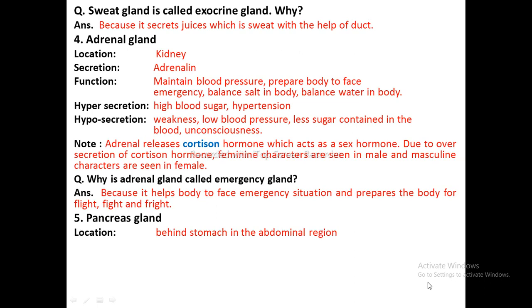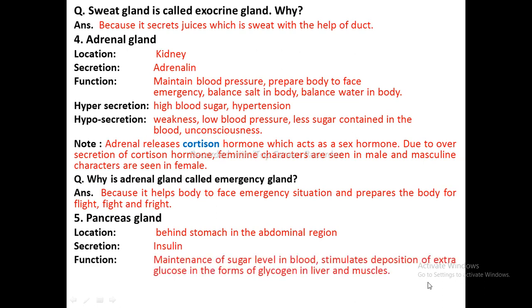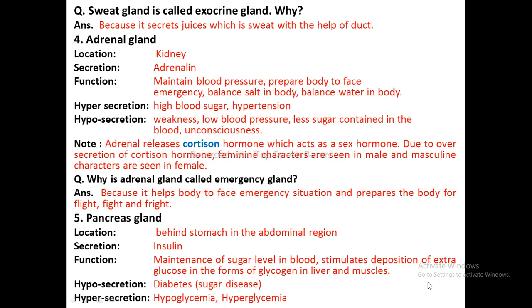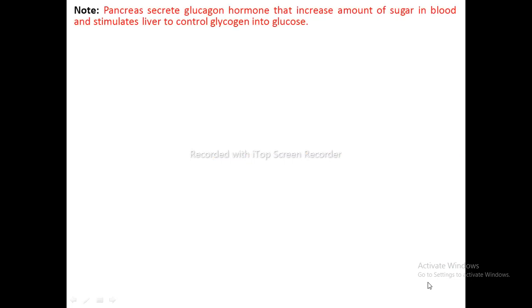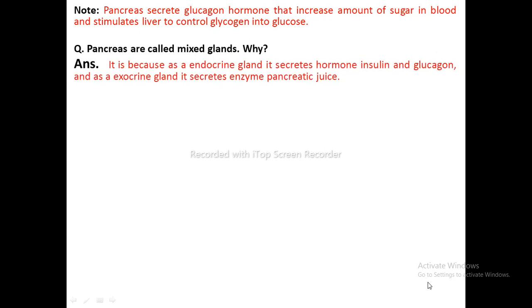Pancreas: Located behind the stomach in the abdominal region. Hormone — insulin. Function of insulin — maintenance of sugar level in blood, stimulates deposition of extra glucose as glycogen in liver and muscles. Hyposecretion causes diabetes, commonly known as sugar disease. Hypersecretion causes hypoglycemia. Pancreas also secretes glucagon hormone, which increases blood sugar and stimulates the liver to convert glycogen into glucose. Reasoning: Pancreas is called a mixed gland because as an endocrine gland it secretes hormones insulin and glucagon, and as an exocrine gland it secretes the enzyme pancreatic juice.